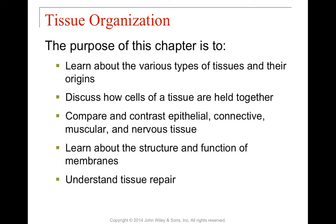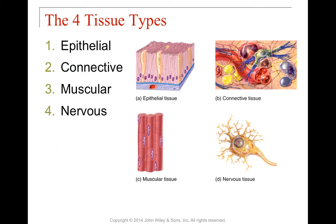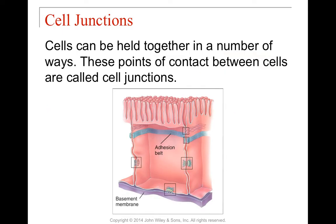We'll talk a little bit more about membranes — a bit more about their structure and function — and also about tissue repair and regeneration at the end of this chapter. The four major tissue types are epithelial tissue, connective tissue, muscular tissue, and nervous tissue. We'll talk about each of those independently, but let's talk about how cells are held together first.